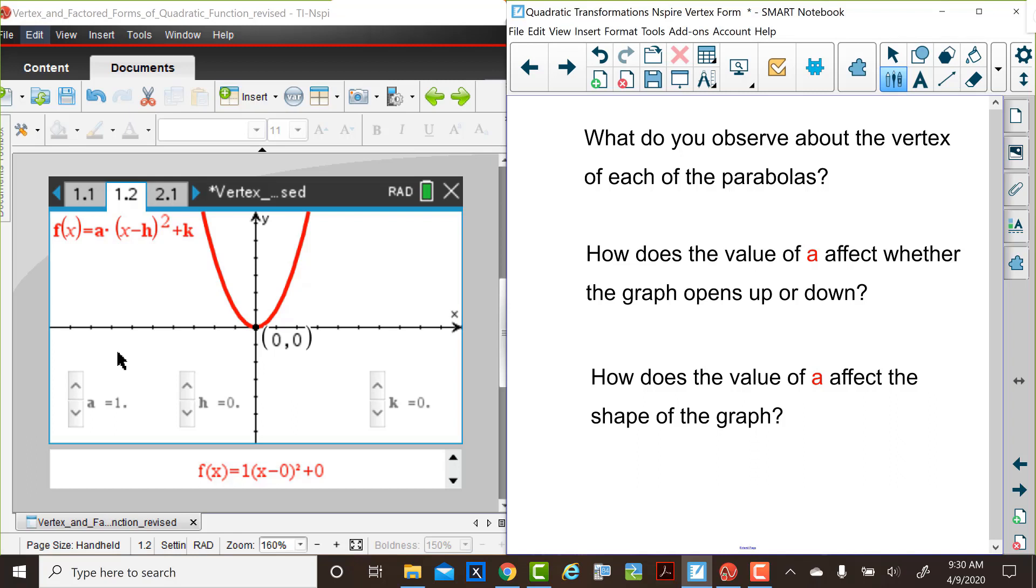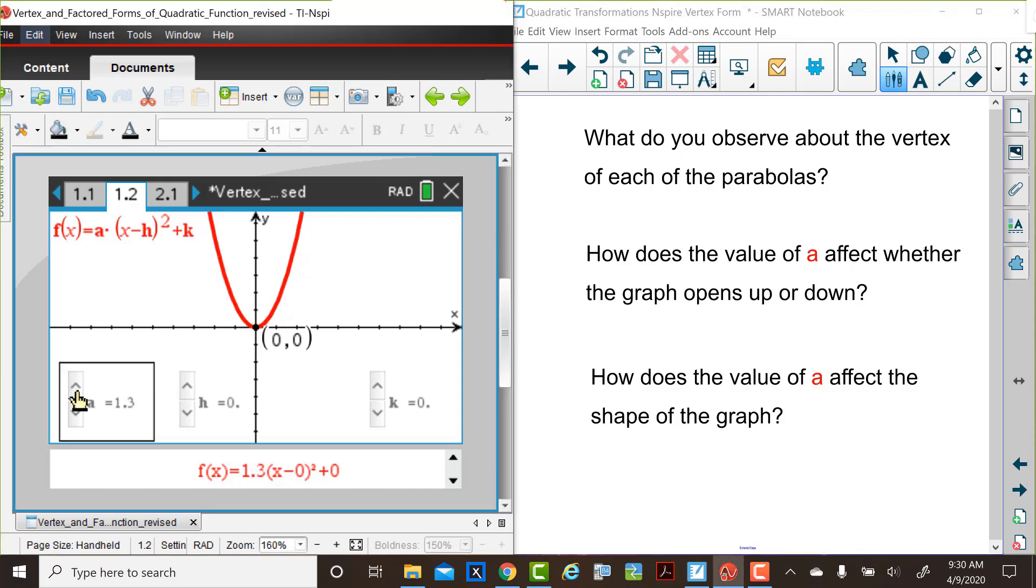In another video, we discuss the effects of changing the a value in the parabola. The current graph f(x) equals x squared before a was changed was the parent function. Let's think about how the value of a affects this graph. When a is changed, does the vertex change? If so, how?